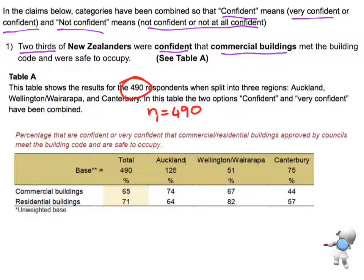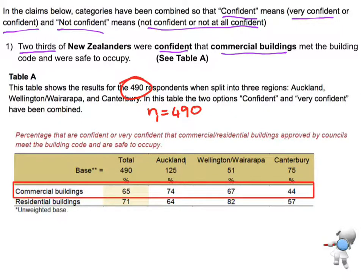Then we have been told, the claim is that two-thirds were confident that the commercial buildings, so we're just interested in the commercial buildings. And it's talking about from New Zealanders, so it's talking about that total. So that means we're referring to that 65%. So that's the one that we are interested in, is the 65%. And we want to test this claim.